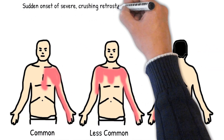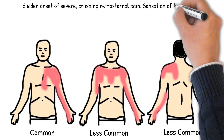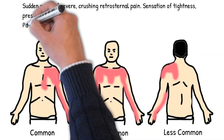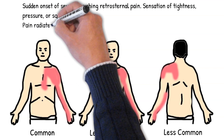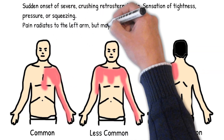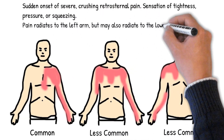Pain radiates to the left arm, but may also radiate to the lower jaw, neck, right arm, back, and upper abdomen (epigastrium). Pain usually lasts greater than 30 minutes.